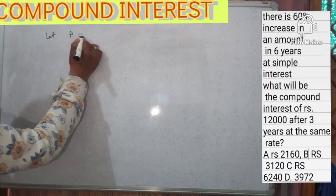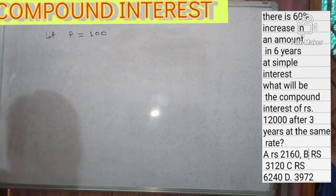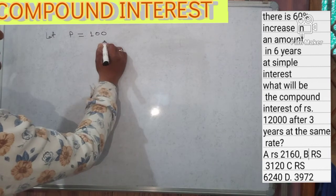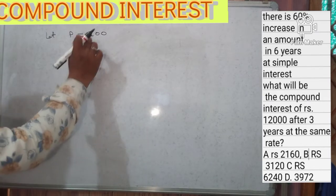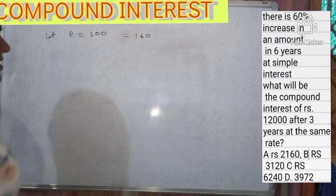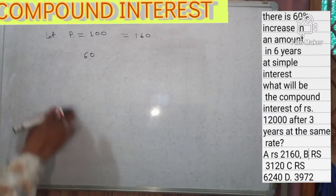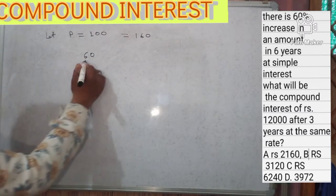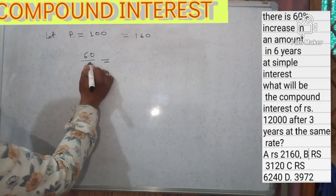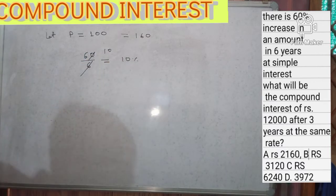Let the principle be 100. A 60 percent increase means the amount becomes 160, so the simple interest is 60 over six years. Dividing 60 by 6 gives us a rate of interest of 10 percent.